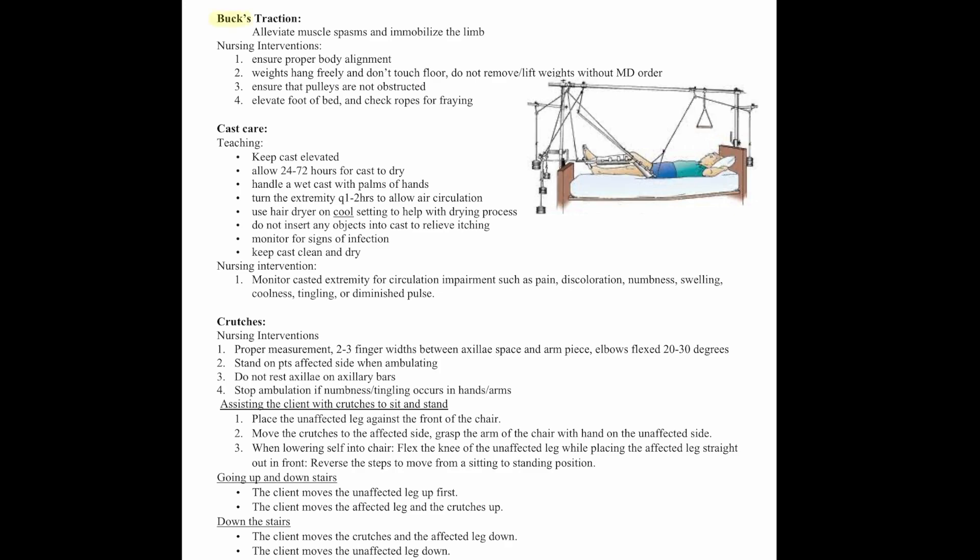Now let's talk about nursing interventions related to the musculoskeletal system. First, BUCKS traction: this alleviates muscle spasms and immobilizes the limb. Nursing interventions include ensuring proper body alignment, weights hang freely and don't touch the floor, do not remove weights without a doctor's order, ensure pulleys are not obstructed, elevate foot of bed, and check ropes for fraying.